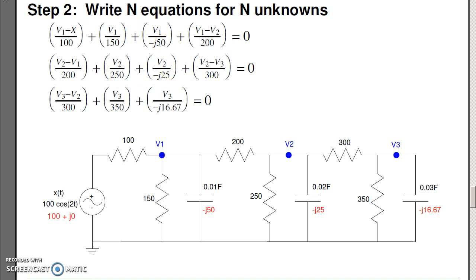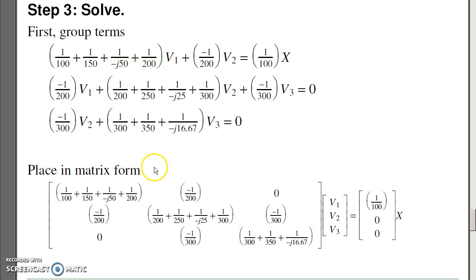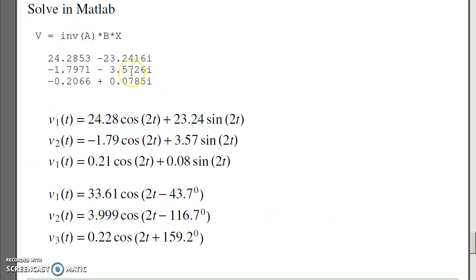Now solve. Same as we did before, except now I've got complex numbers. When I solve, I group terms, put in matrix form, and it looks just like we had before, except now the numbers are complex. If you solve in MATLAB, you get complex numbers. This is where you really need MATLAB. MATLAB lets you solve three equations, three unknowns. It doesn't care if the numbers are real or complex. It handles it just fine. What these numbers mean is the real part is cosine minus j is sine, and the frequency stays the same. The input was at two radians per second. All the outputs are two radians per second. And I can express it in rectangular form or polar form. Your pick.